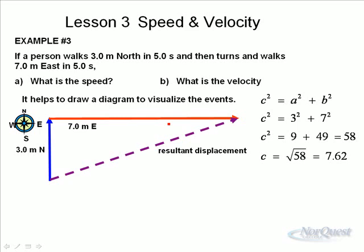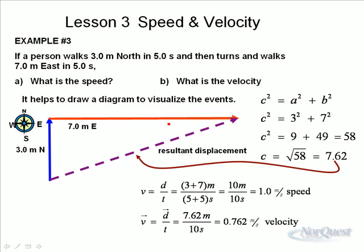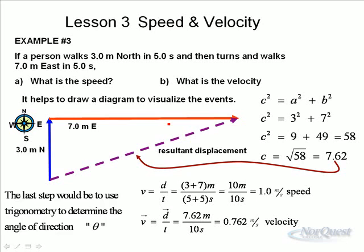But of course, displacement is a vector. Vectors must have directions. So we need to find out what the angle is. And I've done a little bit of a calculation here. We can see the speed is still one meter per second. The velocity works out to be 7.62 meters, that's our displacement, divided by ten seconds gives us a velocity of 0.762. However, that's not the complete velocity because it doesn't include the direction. So the last step would be use trigonometry to determine the angle of direction. We won't do that right now. But to figure out this angle of deflection, we would use some simple sine, cosine, tan types of trigonometry.